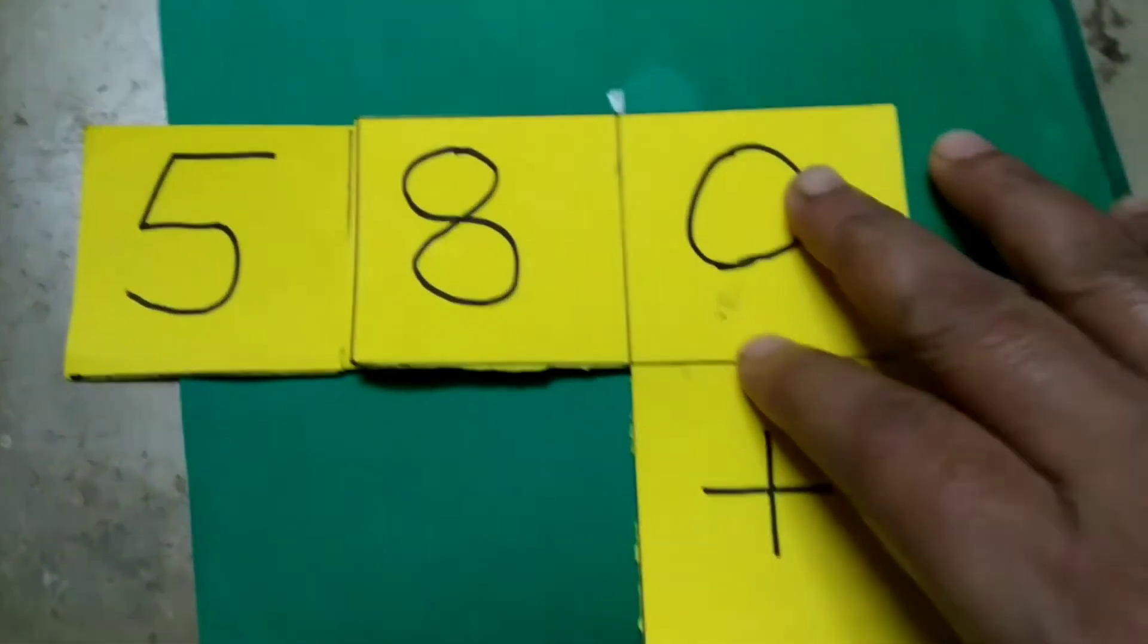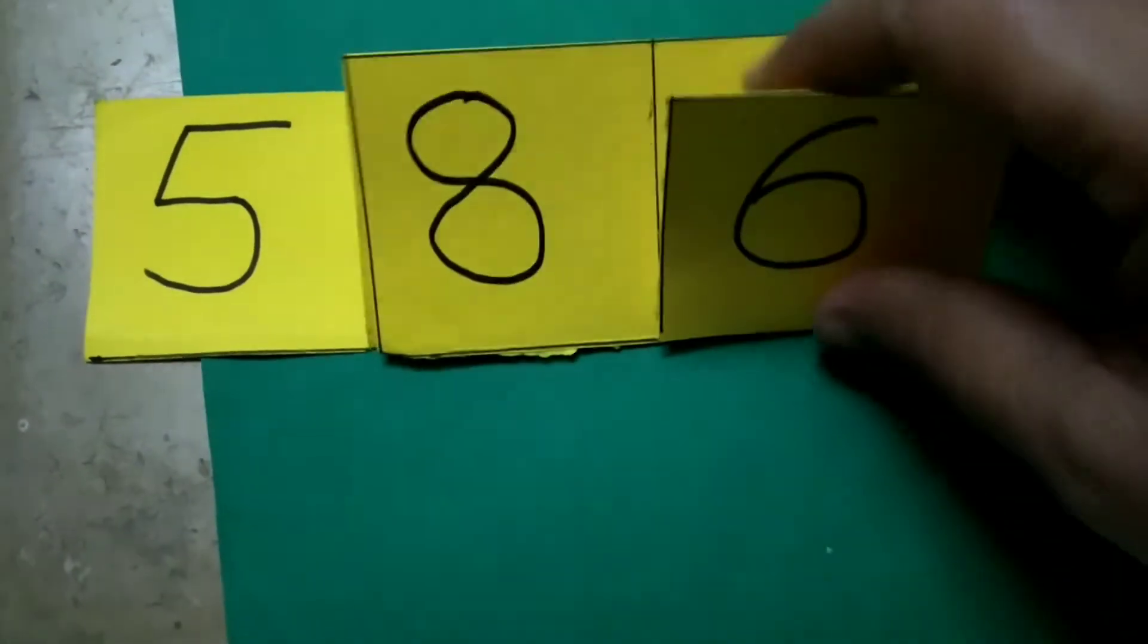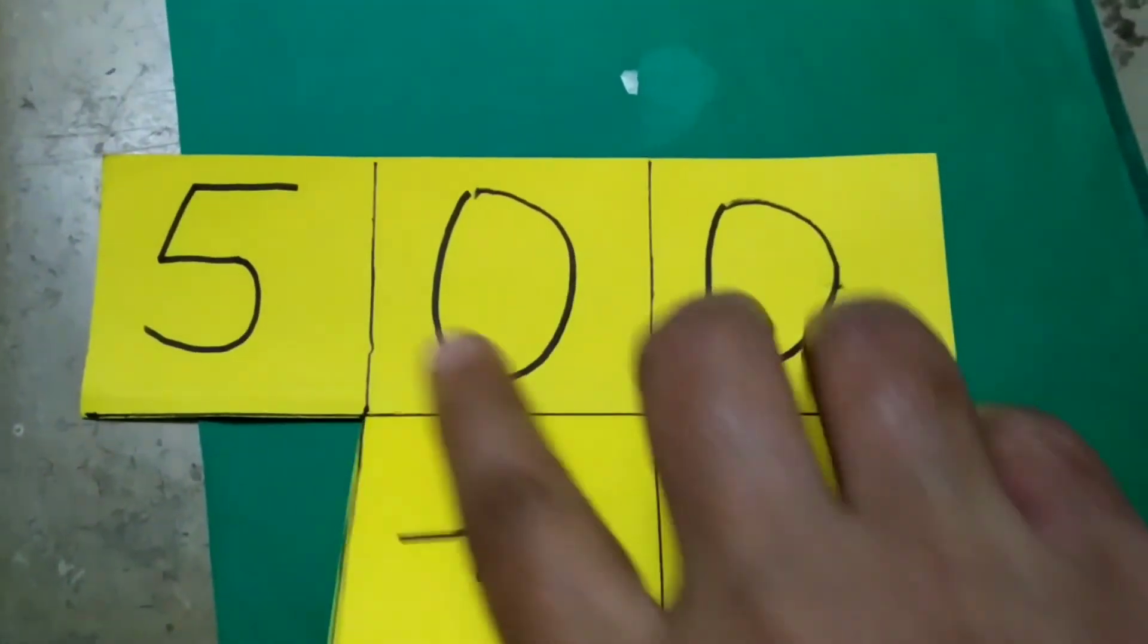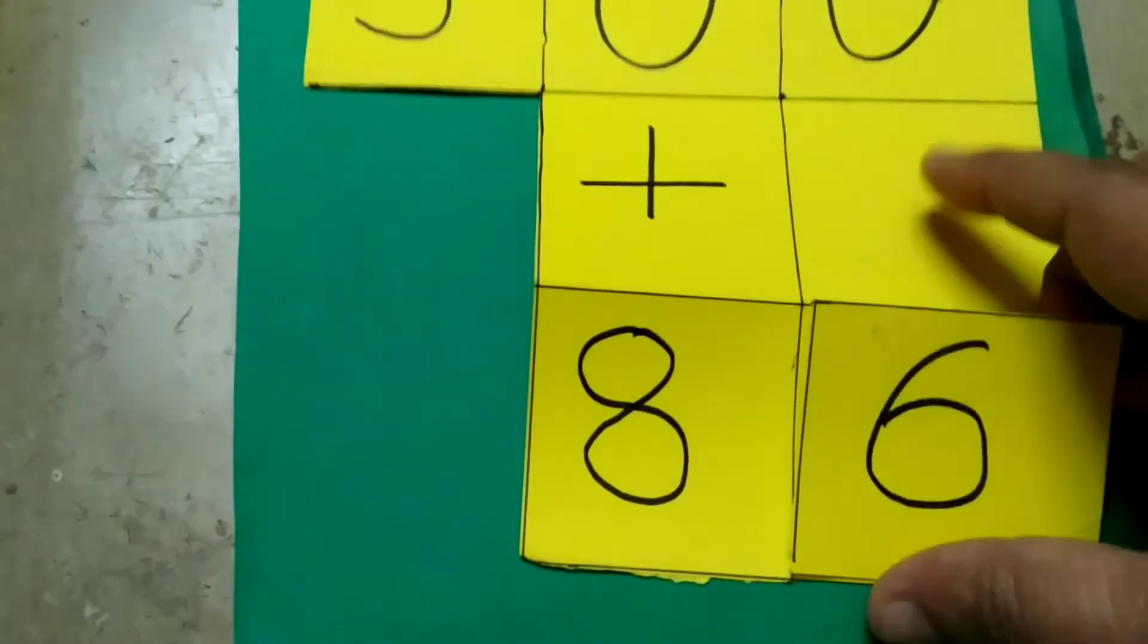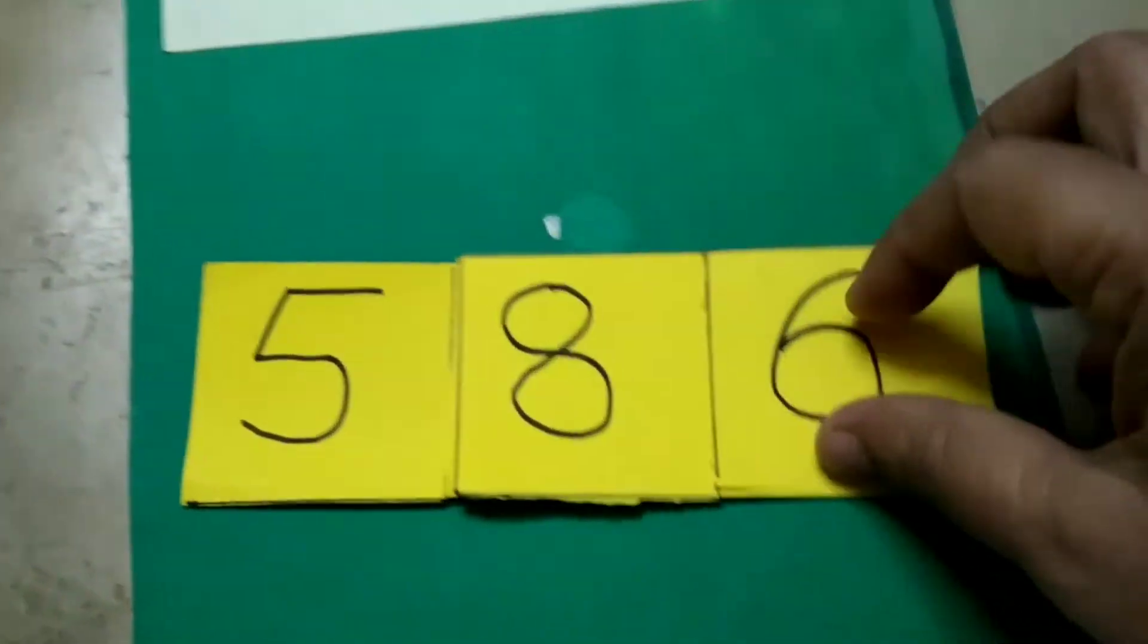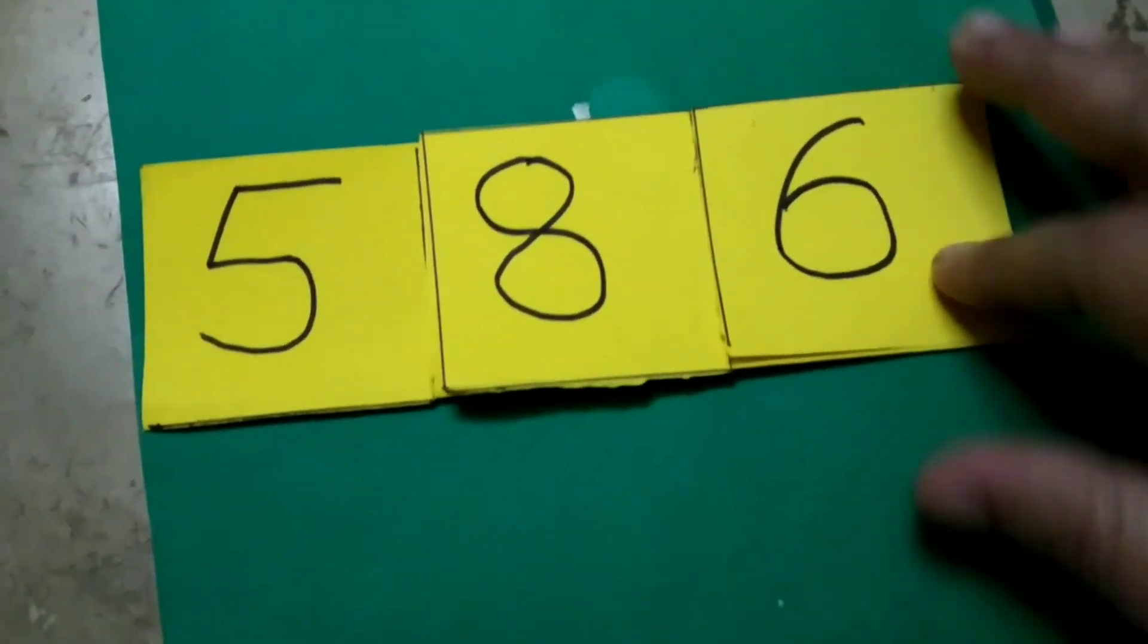And 5 is at 100th place, so 500. So 500 plus 80 plus 6 means the number is 586.